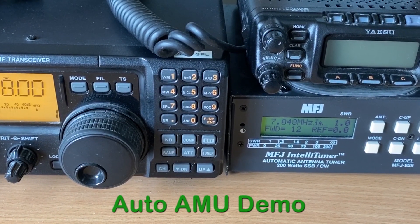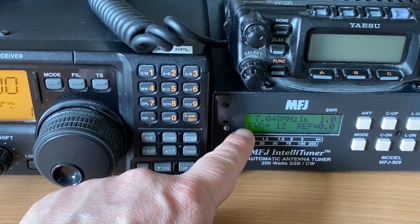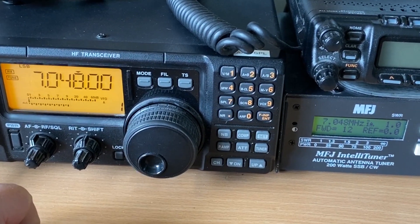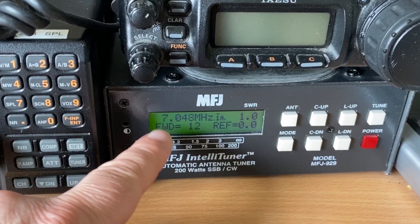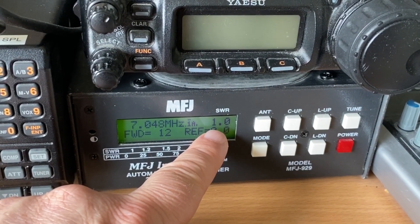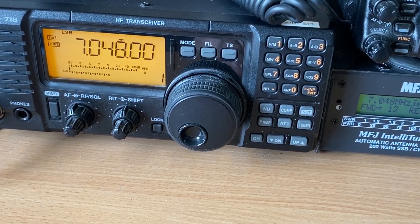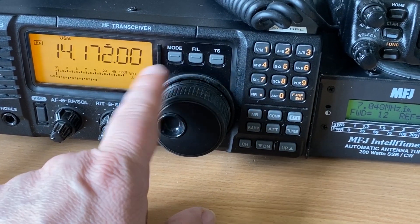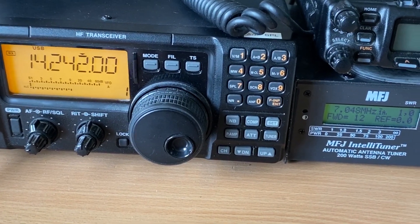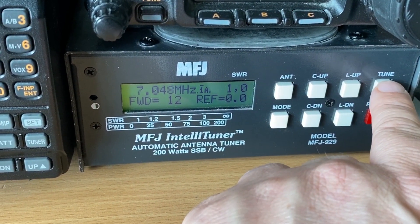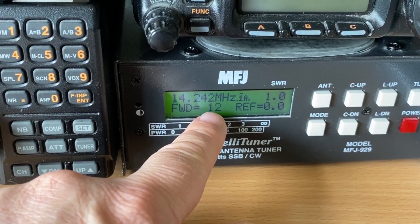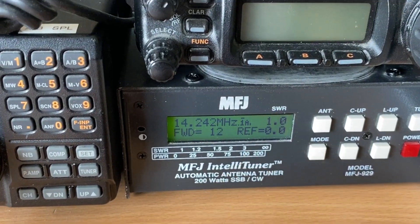Here's a very quick demonstration of using an automatic AMU. Here's the AMU, and the radio, currently on a frequency of 7.048 MHz on the 40m band. And the AMU is currently showing a forward power of 12 watts, reflected of 0, which gives me a ratio of 1 to 1. Let's say I now want to change to the 20m band. Let's look for a frequency of 14.242. Go over to the AMU, and press the tune button, and it will automatically tune in. There we go, I still have forward of 12, reflected of 0, and a good 1 to 1 match.